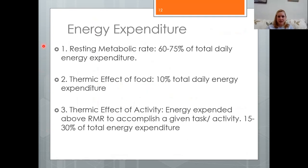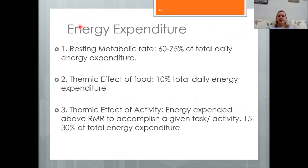From a caloric standpoint, total daily energy expenditure is based on three variables. Number one is resting metabolic rate, also known as basal metabolic rate, which accounts for about 60 to 75% of total energy expenditure.